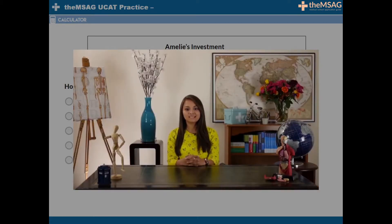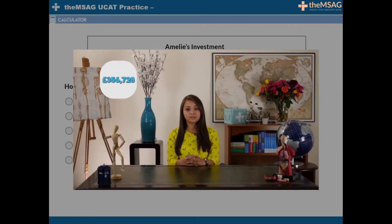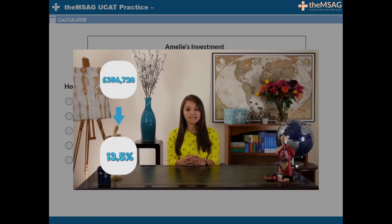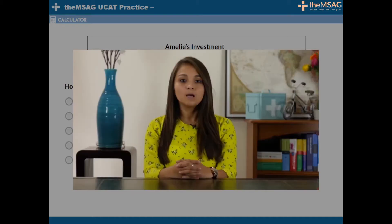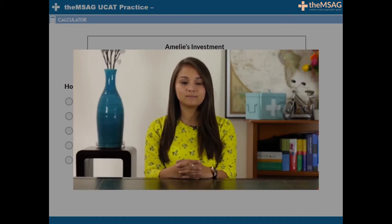Of course, if the investment was 356,728 pounds and the percentage drop was 13.5%, then the calculator would be far superior. But for round percentages, you can usually work it out quicker in your head.